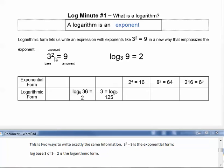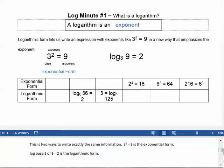This is two ways to write exactly the same information. 3 squared equals 9 is the exponential form. Log base 3 of 9 equals 2 is the logarithmic form.